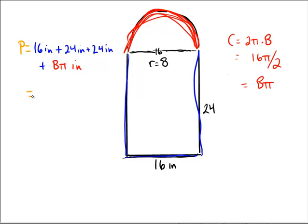So again, grab a calculator, see what we get. We're going to use 3.14 for pi. And we have 16 plus 24 plus 24 plus 8 times pi. And I am getting an answer of 89.12 inches. Hopefully you got the same.